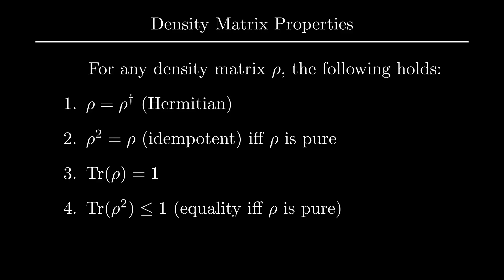Since projection operators have trace 1 and rho is simply a convex combination of them, we have that the trace of a density matrix is always 1. This is effectively a generalization of the normalization condition we have for pure states.